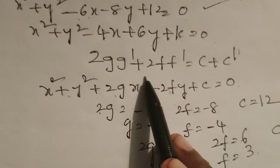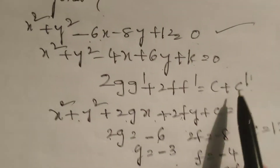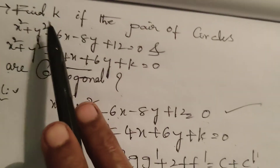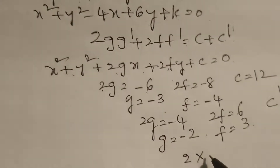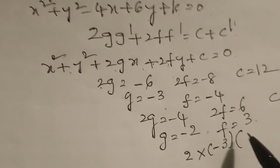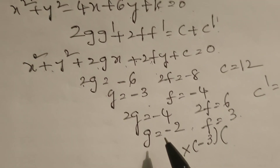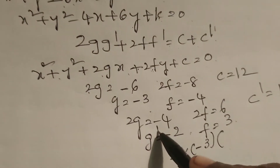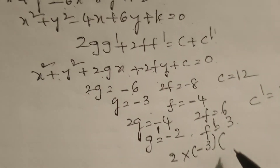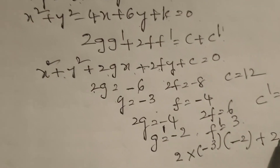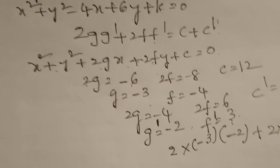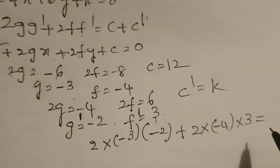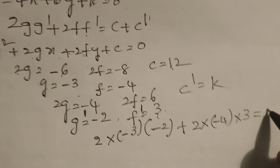Substituting into 2gg' + 2ff' = c + c': 2 × (-3) × (-2) + 2 × (-4) × (3) = 12 + k.